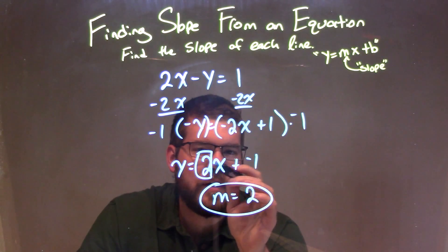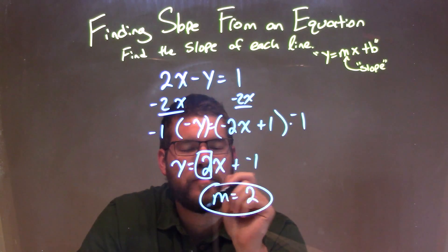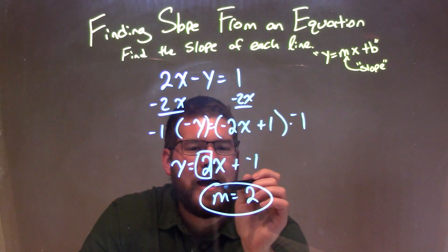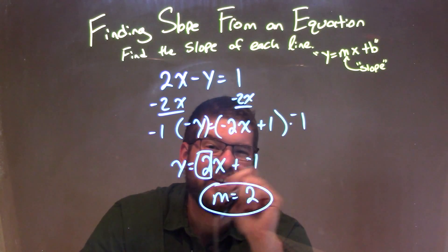We identify m, the coefficient in front of x. Our final answer is m equals 2. That is our slope.